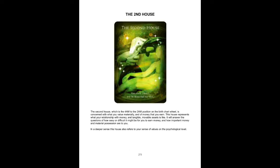The second house, which is the 4 a.m. to the 2 a.m. position on the birth chart wheel, is concerned with what you value materially and the money that you earn. This house represents your relationship with money and tangible movable assets. It will answer questions of how easy or difficult it might be for you to earn money and how important money and material possessions are to you. In a deeper sense, this house also refers to your sense of values on the psychological level.